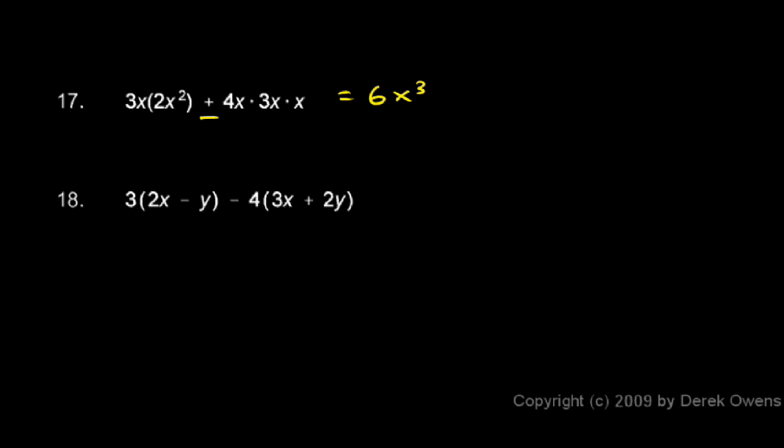And then we have plus this next term, so plus, and let's simplify this now. Take the 4 times the 3, those multiplied together, everything there is multiplied, so the 4 times the 3 is a 12, and then we have x times x times x. That's x cubed.